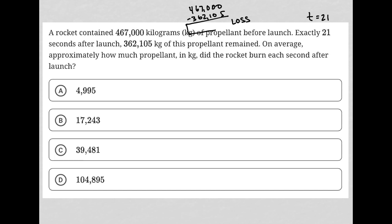We want that difference value, and then divide it by 21, because that'll get us into kilograms per second — each second. I'm going to throw it into a calculator because you'll have a calculator there. So 467,000 minus 362,105 — I just type that into my calculator and what I got was 104,895.